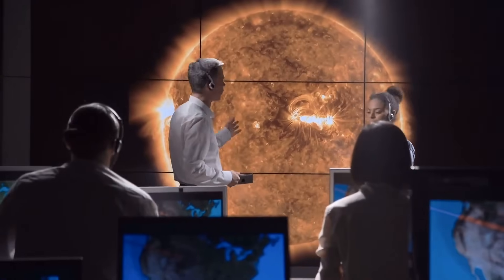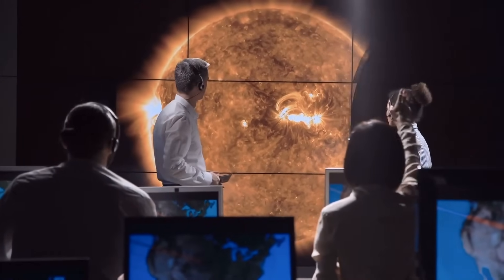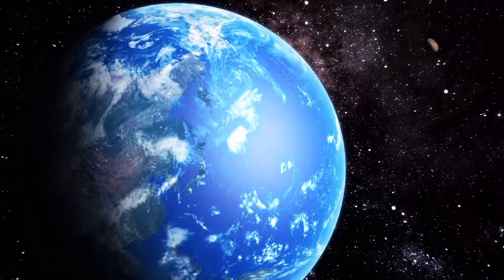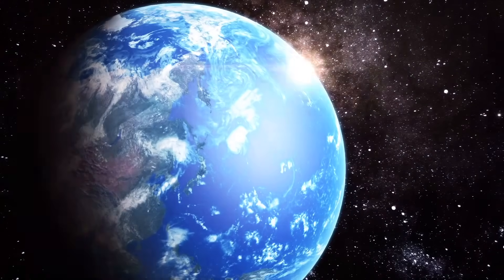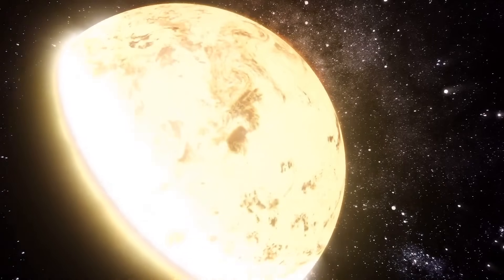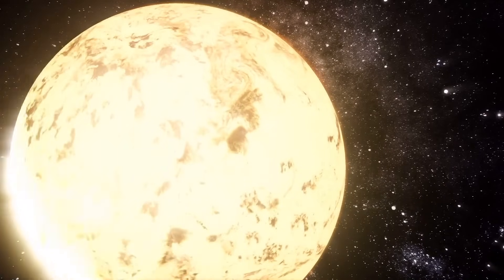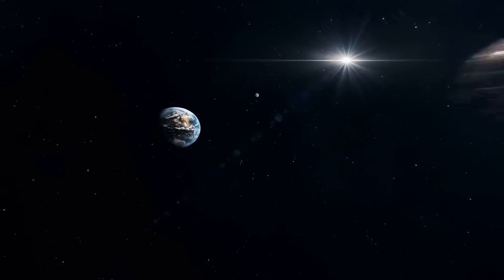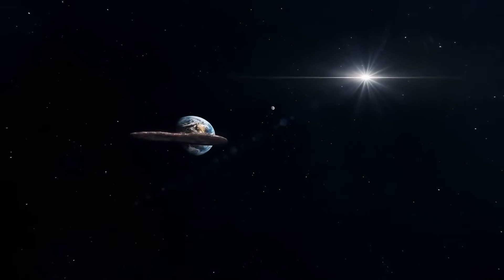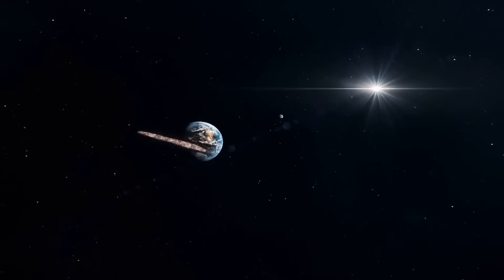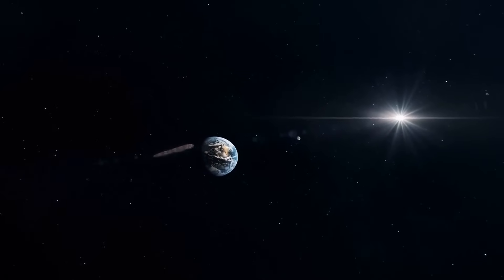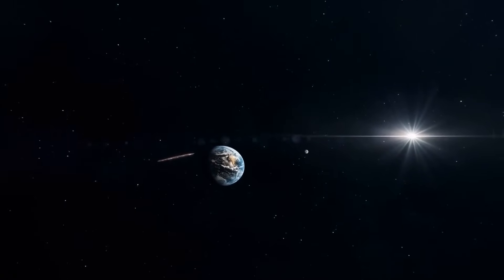This theory, while provocative and highly controversial, was supported by some in the scientific community. They believed that Oumuamua's unique features, like its elongated structure and unusual acceleration, might indicate an artificial origin. However, it is crucial to note that many in the scientific community were skeptical of these claims, with the prevailing view being that Oumuamua is likely a natural object, and its strange properties are the result of natural processes and phenomena.